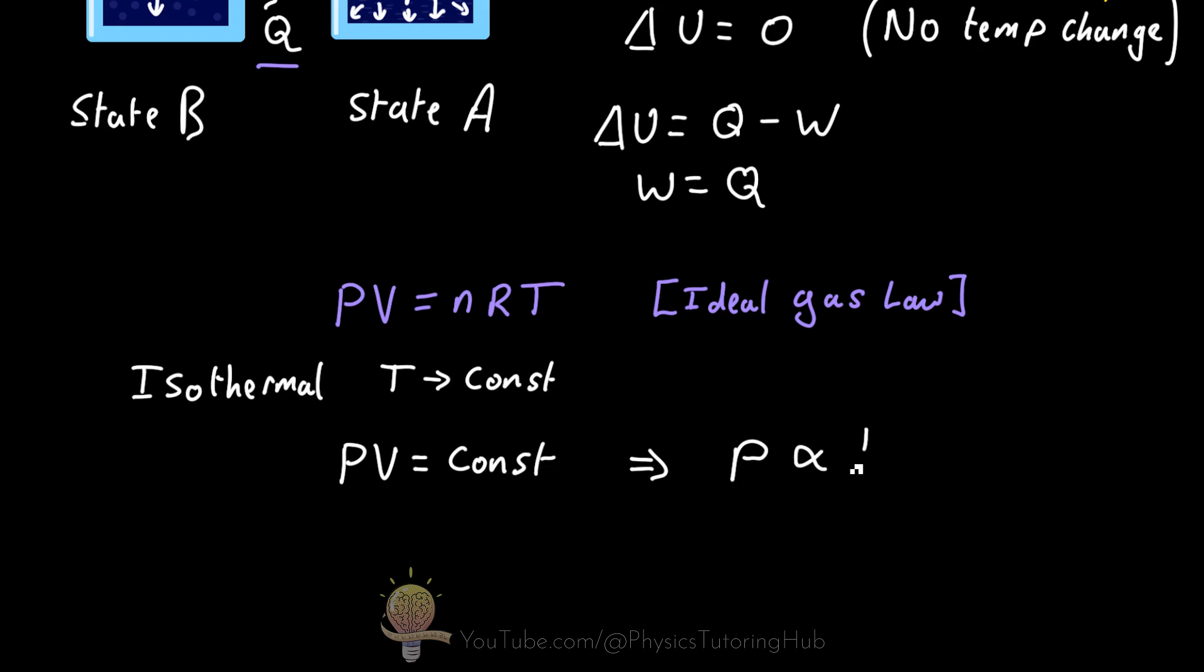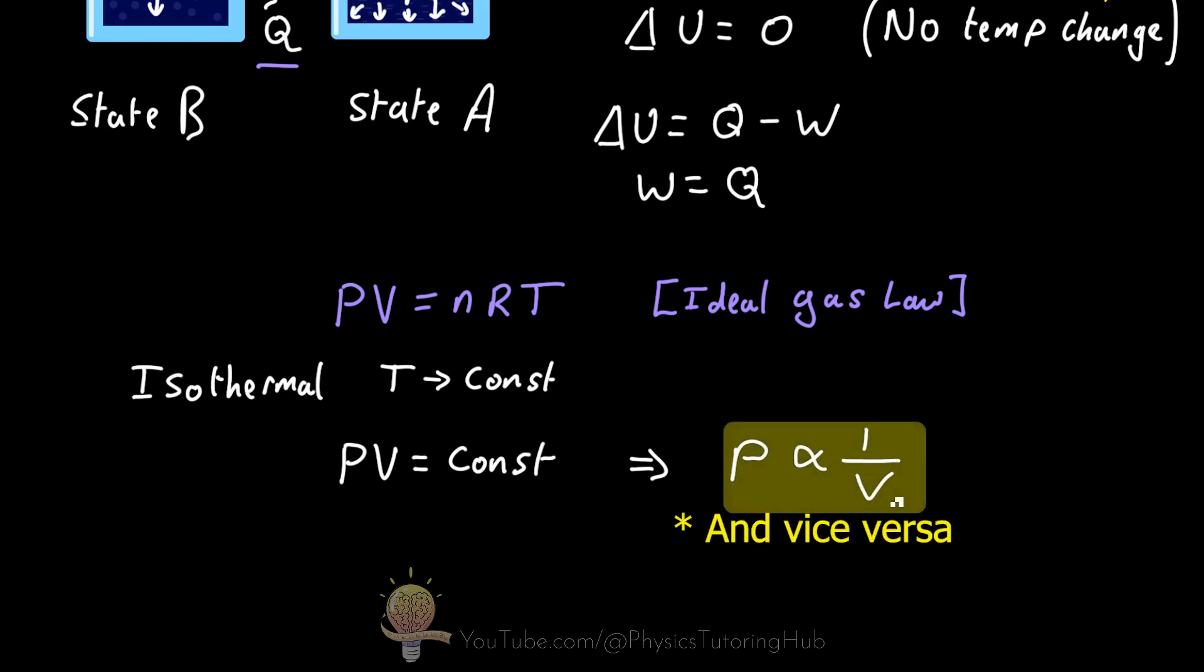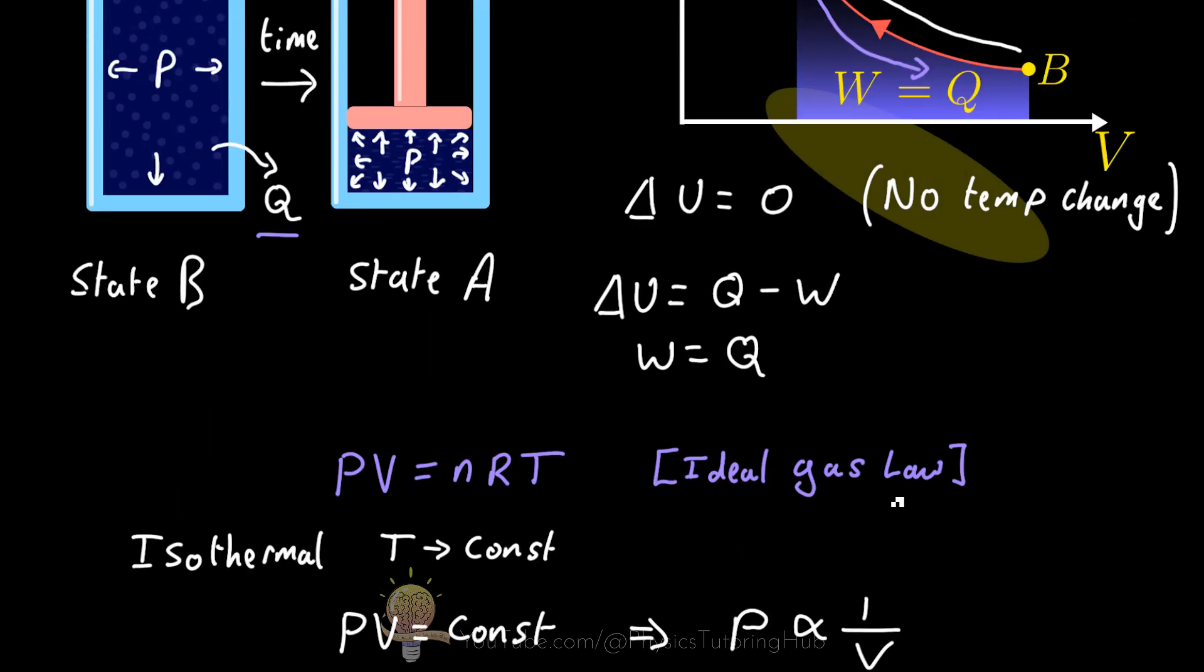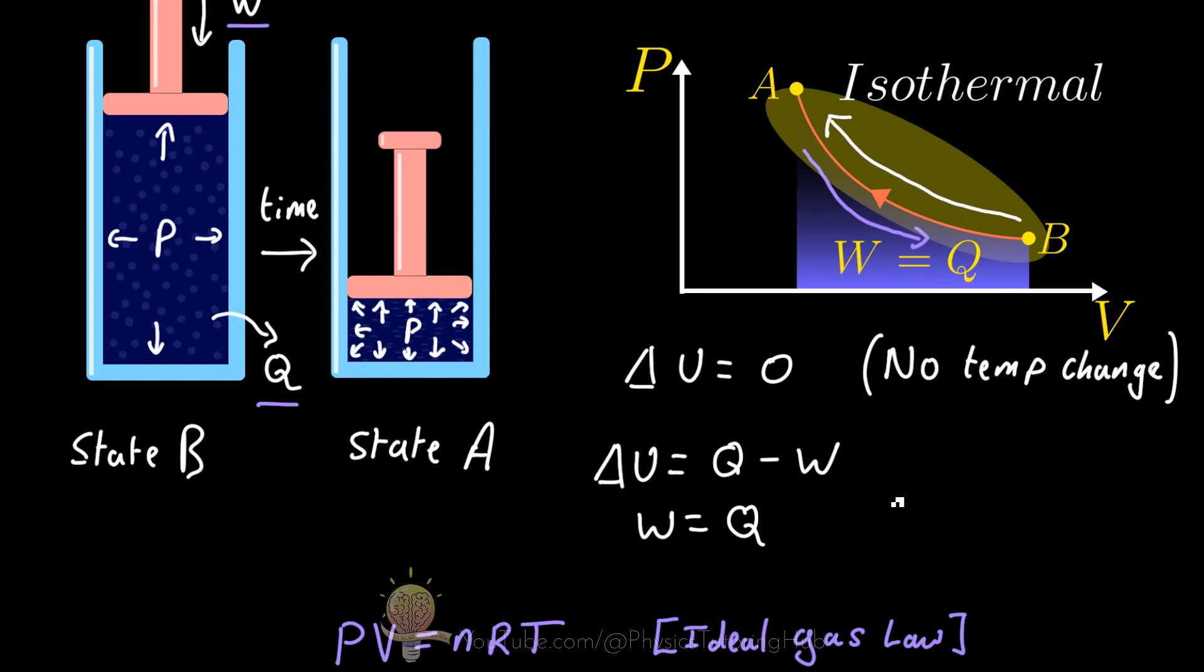So we end up with pressure multiplied by volume is equal to a constant. And because the temperature is constant, the ideal gas law tells us that any change in volume will result in an inverse change in pressure. So pressure is proportional to one over the volume here, and this is why we get this curve.